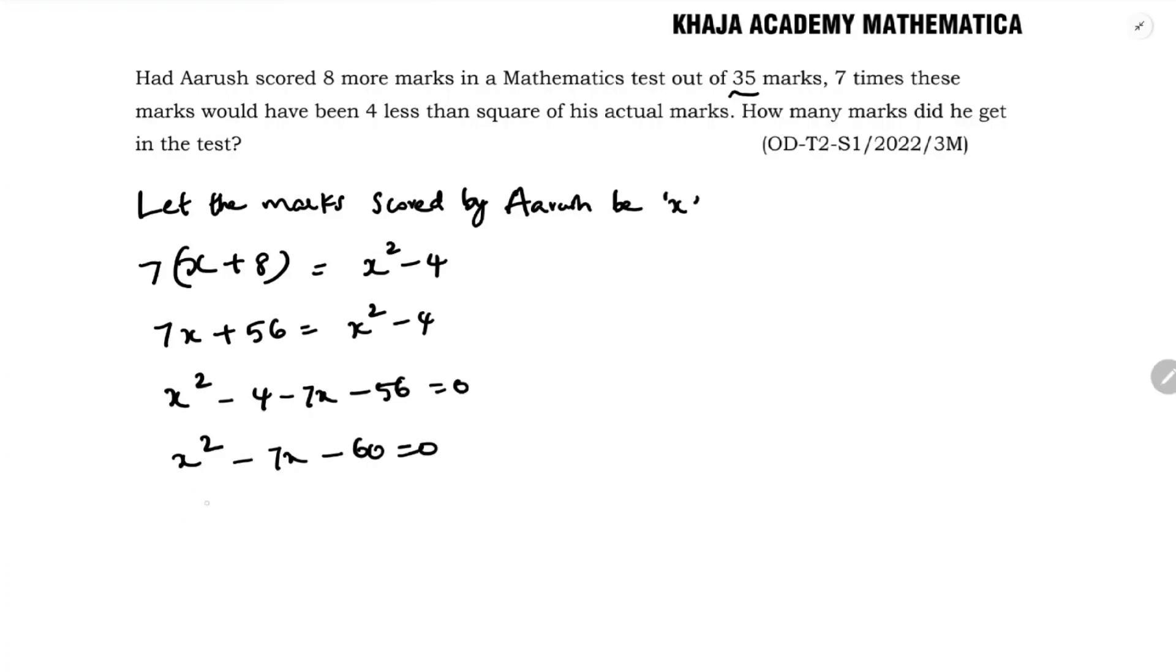If we factorize this part: x², 12 times 5 is 60, so we get x² minus 12x plus 5x minus 60. Taking x common: (x-12)(x+5) equals 0.